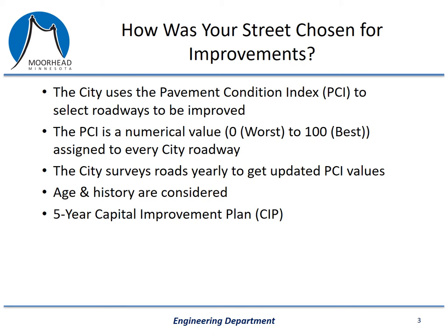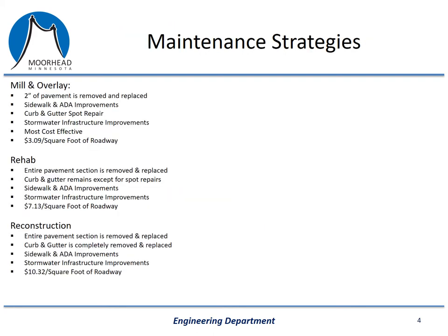One of the ways we use our money most efficiently is by performing major maintenance at critical points during the life of the street. Specifically, this happens when we are able to perform what is called a mill and overlay. Before I go into more depth on the pavement condition index, I'd like to explain the three major types of projects that we typically perform. These are what we refer to as a mill and overlay, a rehab, and a reconstruction.